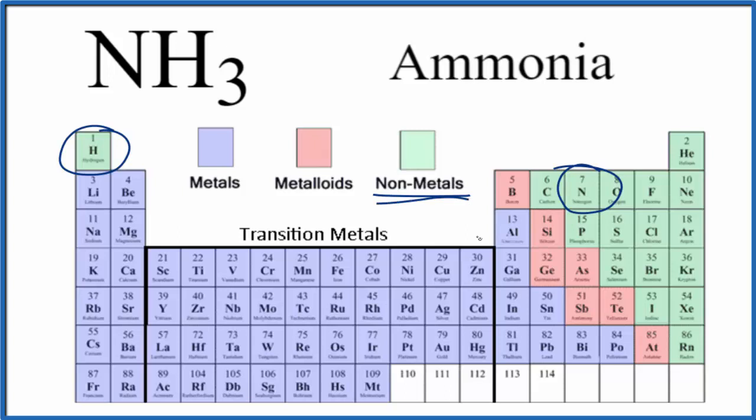So we have two nonmetals. When we have two nonmetals, we have a covalent bond, also called a molecular bond. So we'll have covalent bonds with this NH3. Our type of bonds are covalent or molecular bonds.